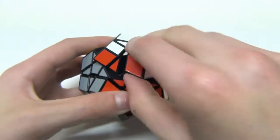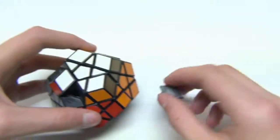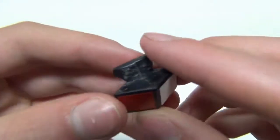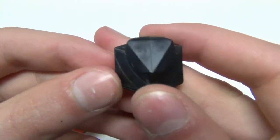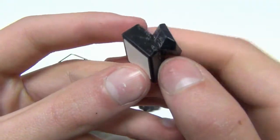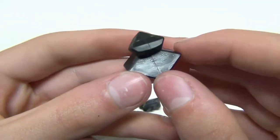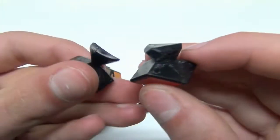Now the mechanism of the Hungarian Supernova is actually very interesting. I'll pull out some pieces for you. Take a look at some of these. This is a corner piece. And as you can see, it has a really interesting shape to it. It's quite different from the MF-8 corner piece.